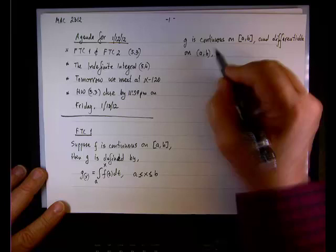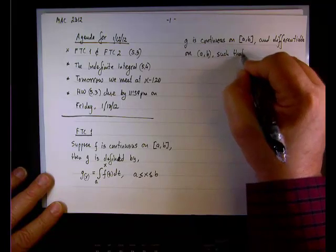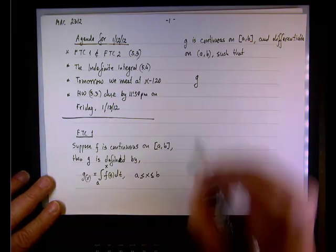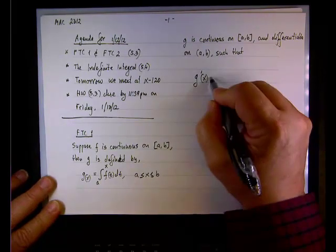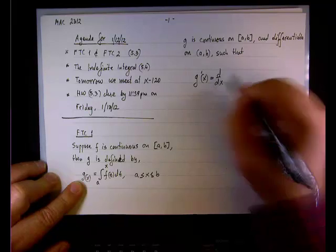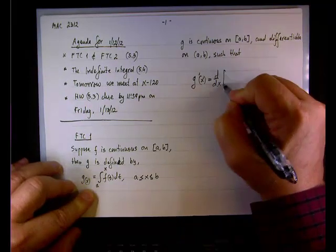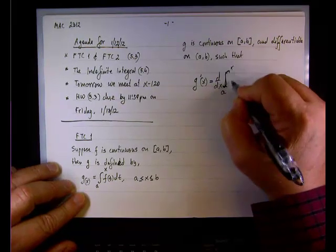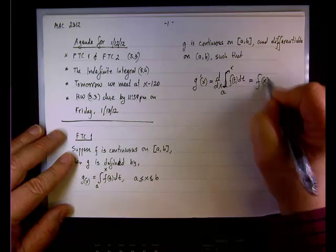But I didn't finish the statement. So G is continuous on the closed interval and differentiable on the open interval such that, and here comes the actual theorem. Up to this point, it was a supposition. In other words, what is the requirement for a function to satisfy the fundamental theorem of calculus part one? So G prime, if G is defined as the integral, well G prime will be the derivative of G. G prime will be d dx of G, but what is G? G is what I wrote here. So I'll put a bracket right here. I'll just put the integral, the integral from A to x of F of t dt.